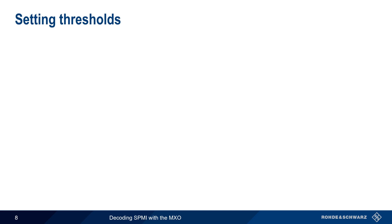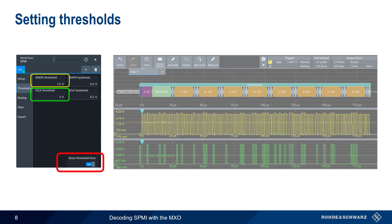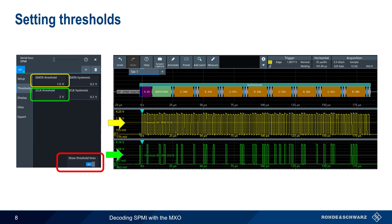Now that we've verified that our input channel levels and time base are configured properly, the next step is setting thresholds — the voltage values that define a logical 0 and a logical 1. Here, the thresholds for Sdata and Sclock are set to 1.5 and 2 volts, respectively. If we enable Show Threshold Lines, we can see that, for this example, these are appropriate thresholds, since the configured voltage values fall almost directly between the high and low states of our clock and data signals.